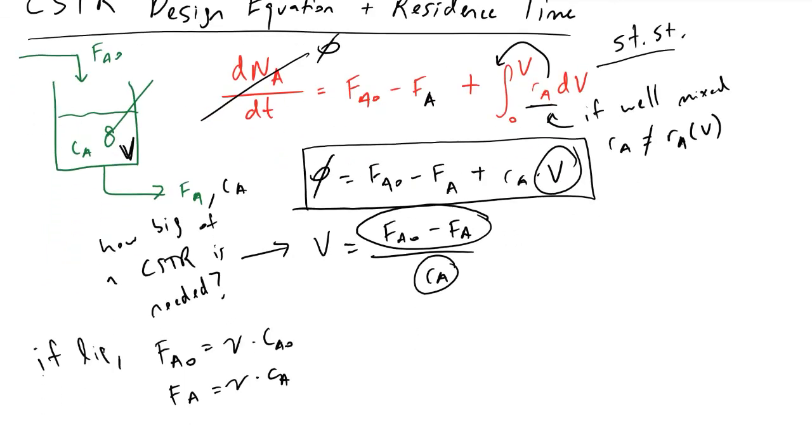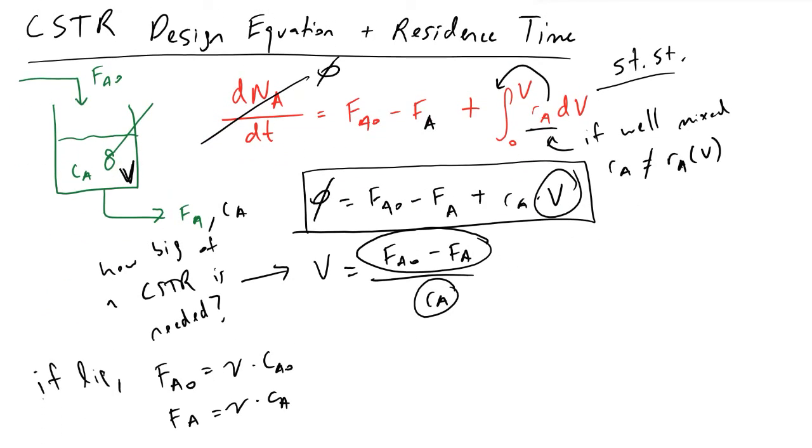And so when we look at the numerator of our volume term right here and we plug and chug, we can pull out this volumetric flow rate, which I denote with little v, and we get CA0 minus CA divided by the rate we have of our reaction.